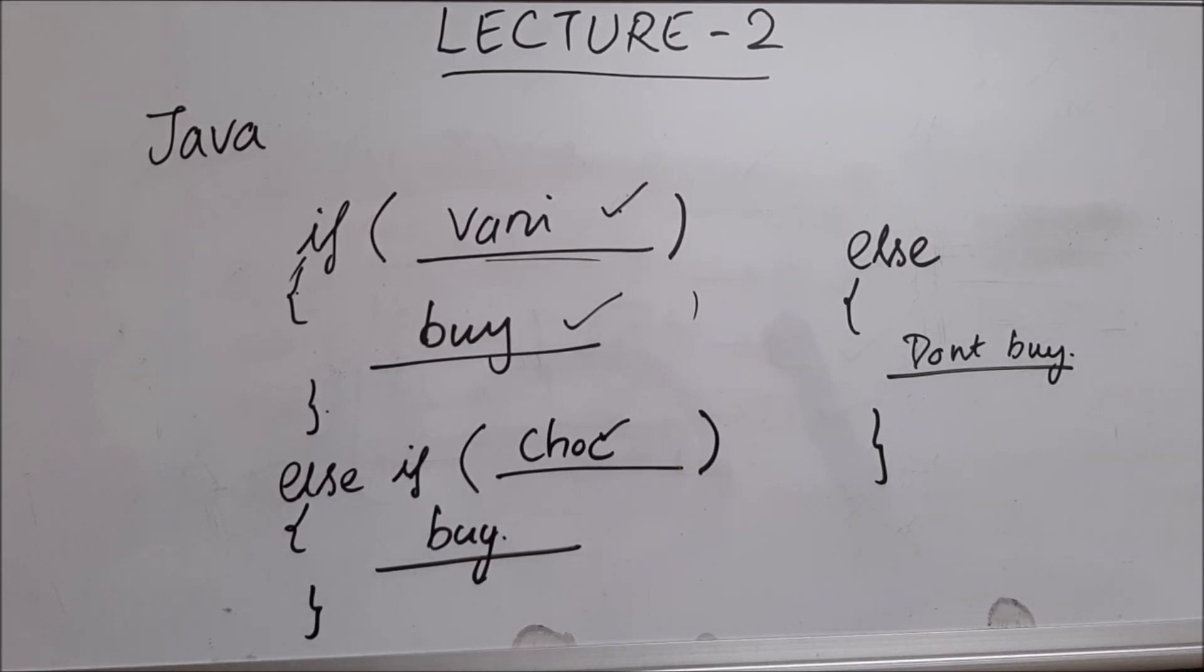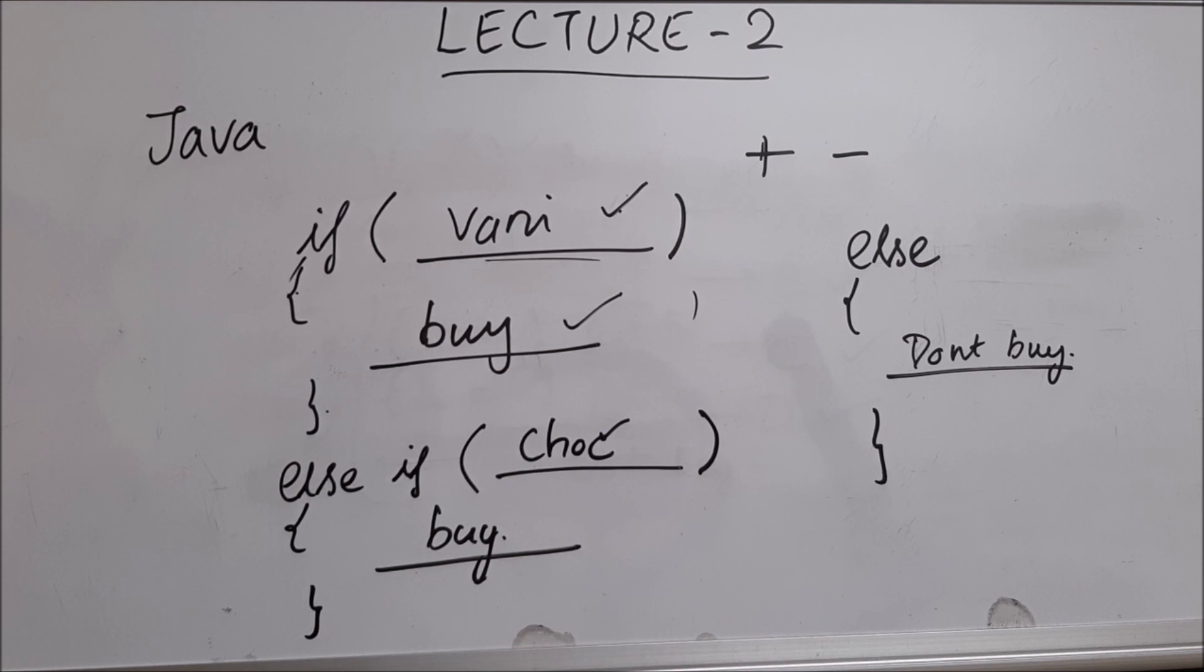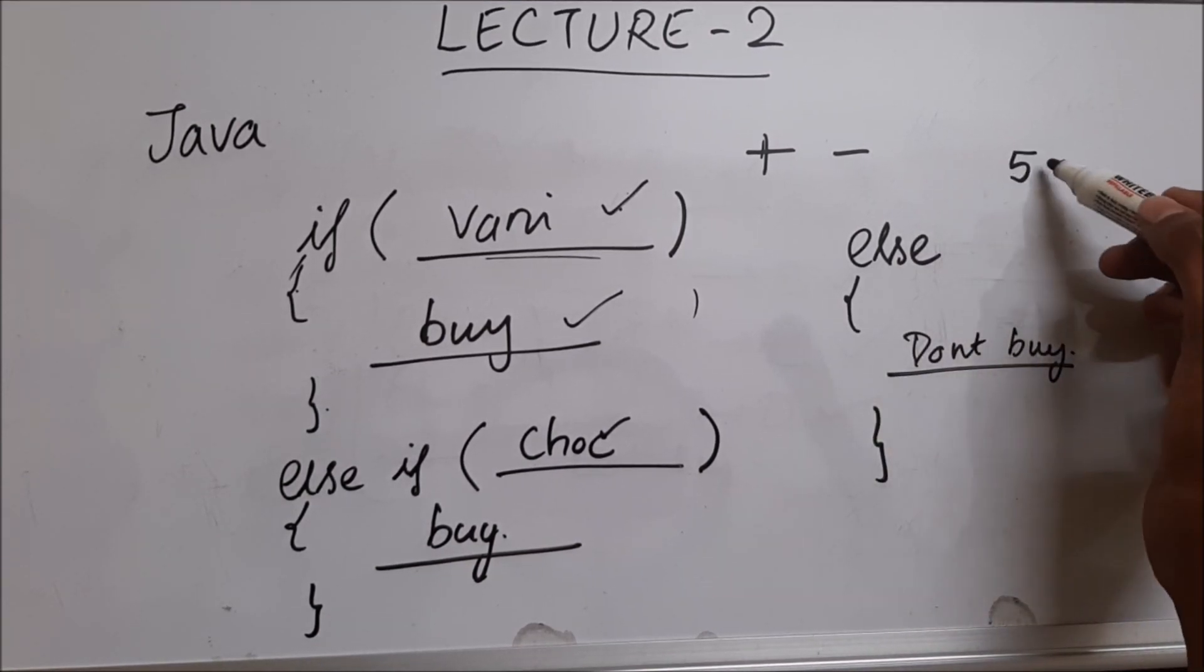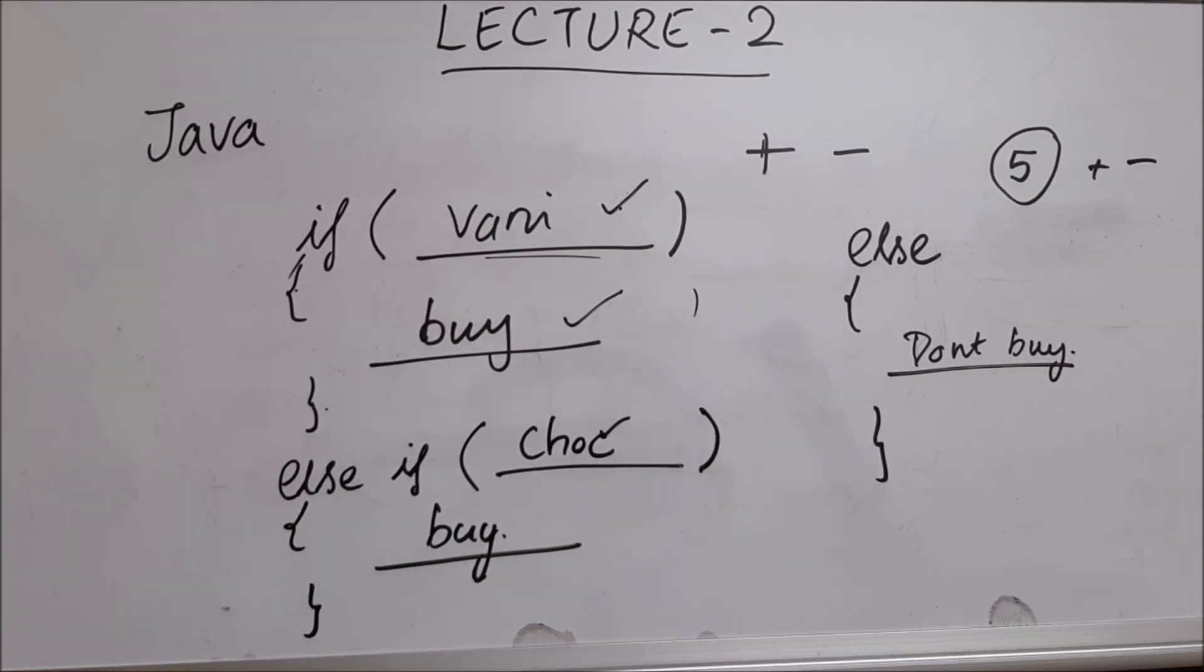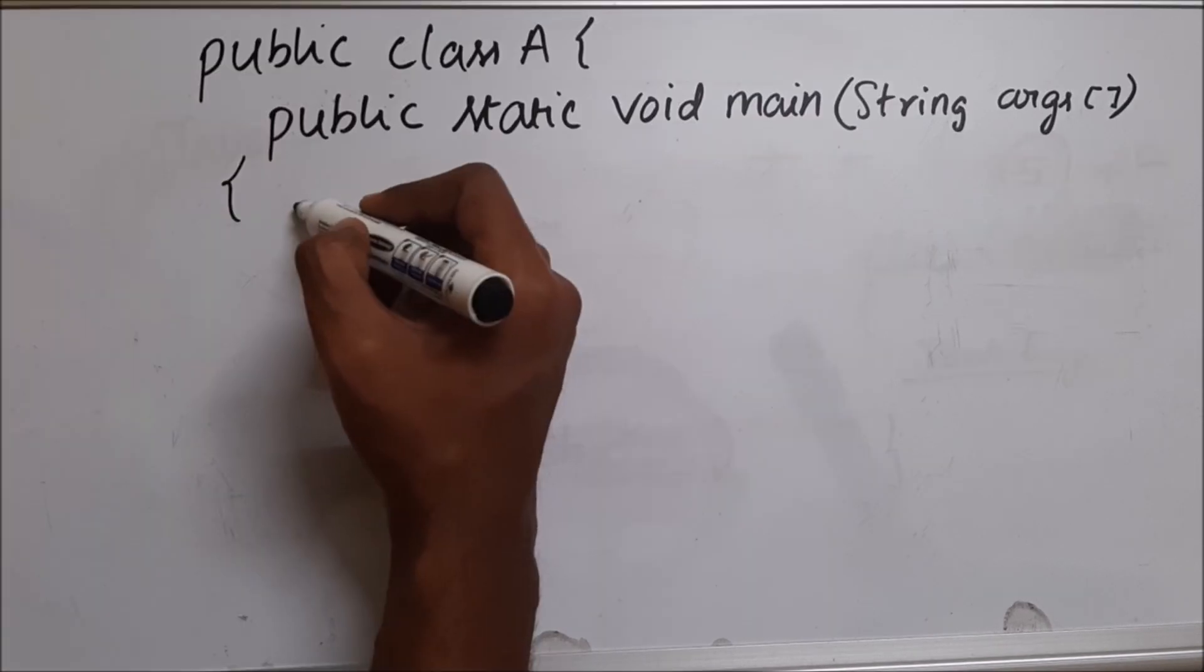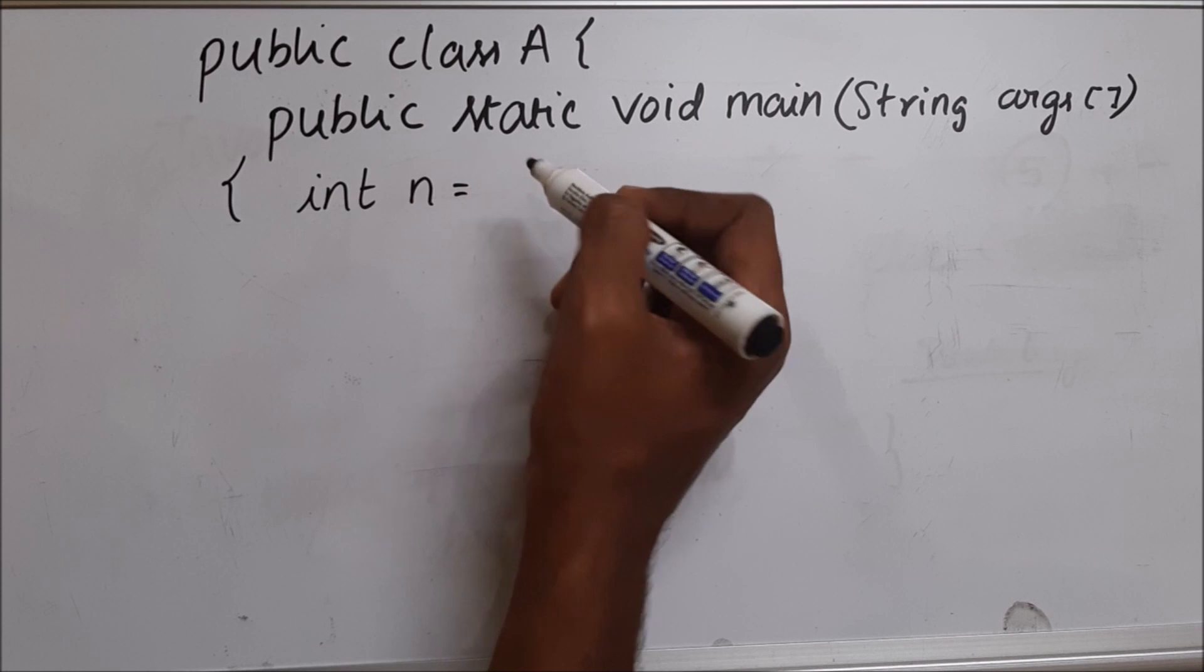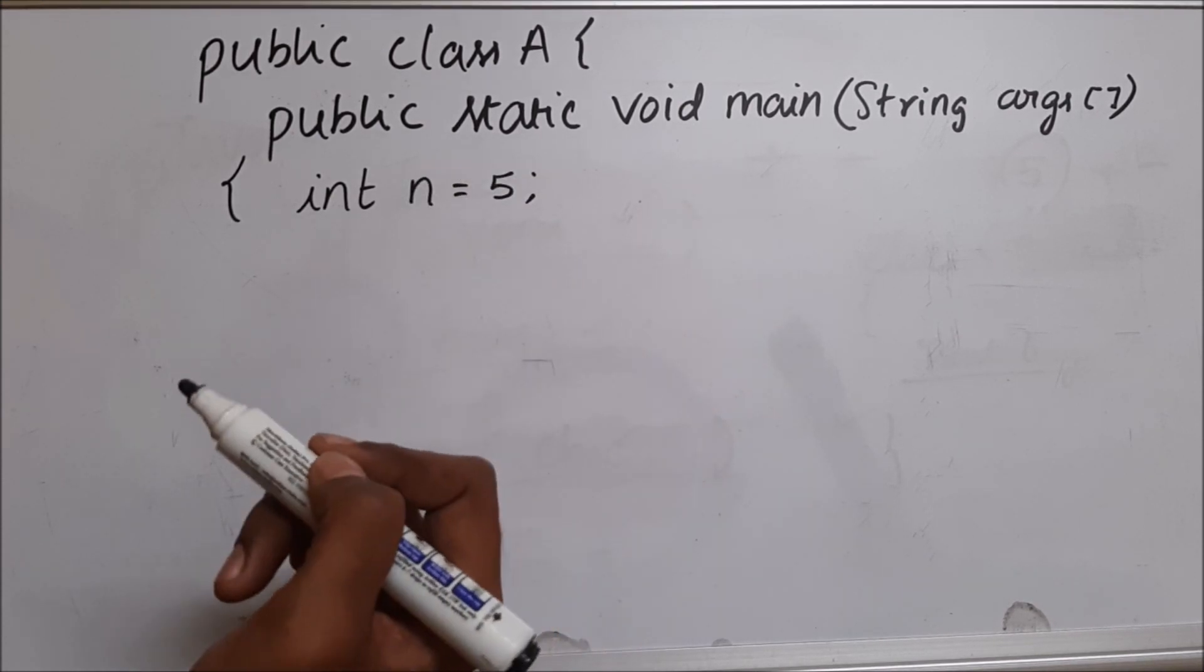Now let me quickly show you a program for positive and negative numbers. You will be given a number, let's say you are given a number 5. You need to check if it is positive or negative. Let's use if to solve this problem. Let's say we are given a number n equals 5. We need to check if it's positive. As I have explained about if...